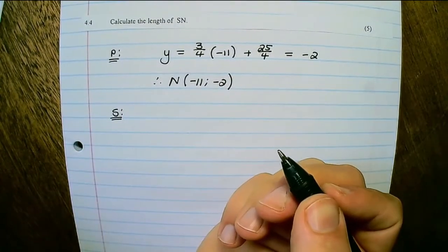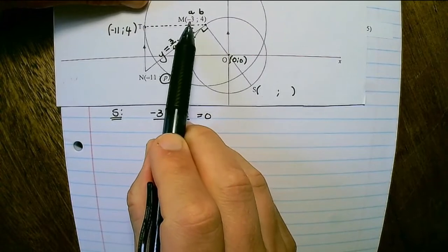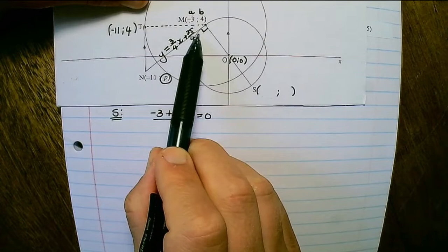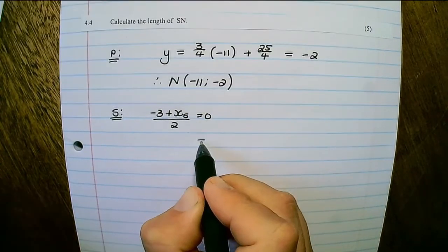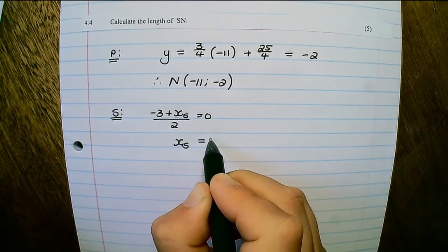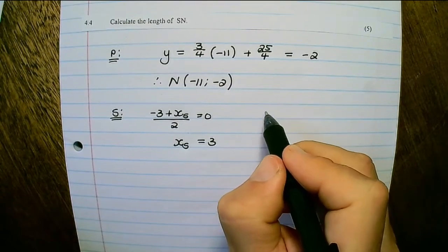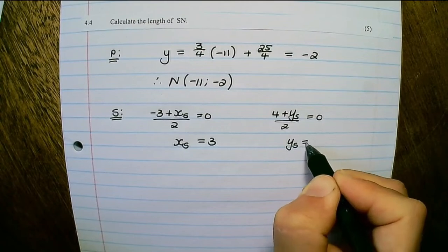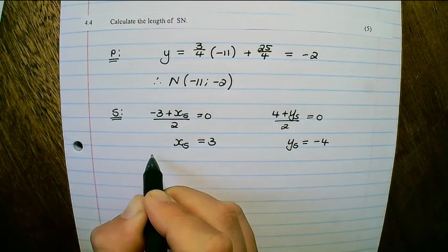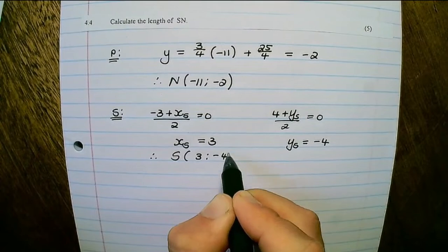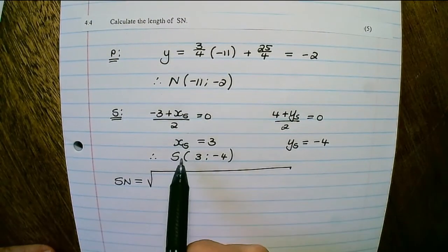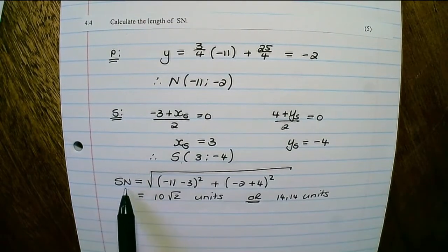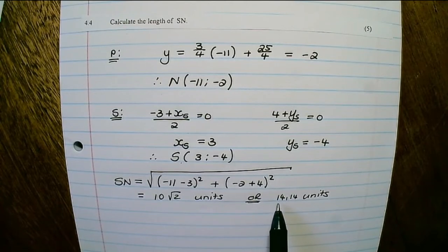To find the coordinates of S, we know that MOS is a diameter, so O(0,0) is the midpoint of M and S. Using the midpoint formula: negative 3 plus X of S divided by 2 equals 0, giving X of S as 3. Similarly, 4 plus Y of S divided by 2 equals 0, giving Y of S as negative 4. Therefore S's coordinates are (3, -4). Using the distance formula, the length of SN is 10 root 2 units, or approximately 14.14 units.